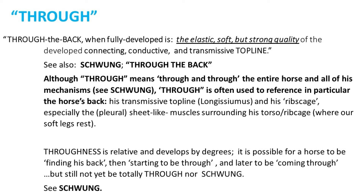Through, or through the back, when fully developed, is the elastic, soft but strong quality of the developed, connecting, conductive, and transmissive top line. Although through means through the entire horse and all of his mechanisms, it is often used to reference in particular the horse's back — his transmissive top line — and his ribcage, especially the pleural, sheet-like muscles surrounding his torso and ribcage where our soft legs rest. Throughness is relative and develops by degrees. It is possible for a horse to be finding his back, then starting to be through, and later to be coming through, but still not yet be totally through nor schwung.